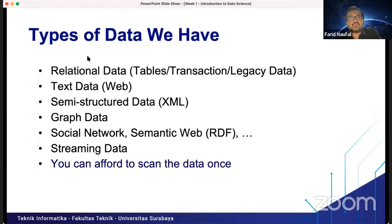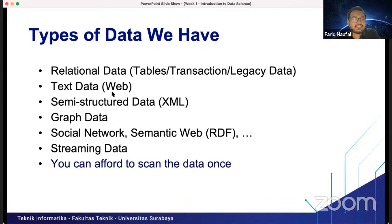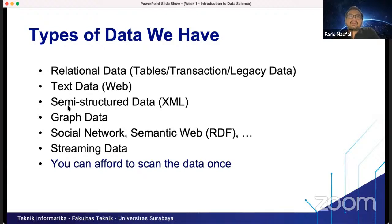The types of data we have: it can be relational data — tables, transactions, or legacy data. We also have text data, which can be stored on the web, like HTML. We also have semi-structured data — script data, social networks, semantic web, RDF, and streaming data. Data can also be in the form of images, pictures, and video.